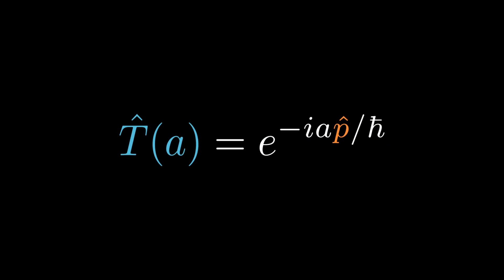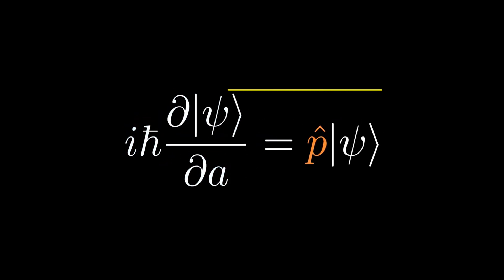The translation operator can therefore be written as T of a equals e to the minus i a p over h-bar, where a is the distance displaced and h-bar in the denominator ensures the exponent is dimensionless. It is physically plausible that the translation operator is an exponential operator in displacement, since for sequential translations, operators multiply but displacements add, which is exactly the property of an exponential function. When the momentum operator acts on a state, it gives the rate of change at which the state changes as we translate the system in space.